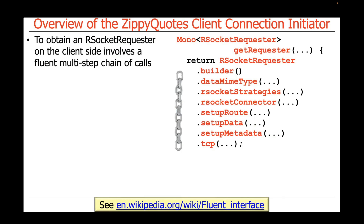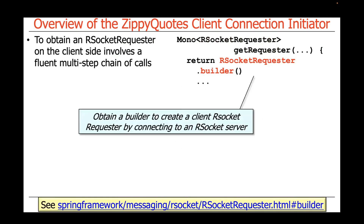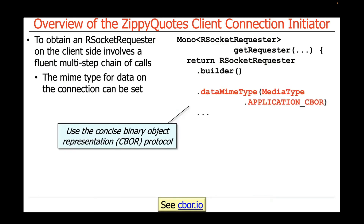Before I gave you a high-level overview — now we're going to talk in more detail about how this actually works. The first thing we're going to do is call the builder method on the RSocket requester, which is a static factory method that makes us a builder we can use to build the rest of the requester.